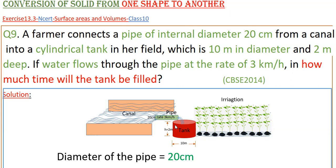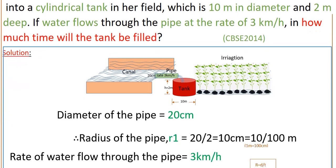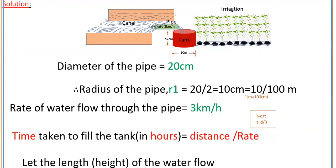Here this cylindrical tank is filled with water from the canal through this pipe. The pipe diameter is given as 20 centimeters and the rate of water flow in this pipe is 3 kilometers per hour, and the tank height is 2 meters deep. The diameter of the tank is 10 meters. Writing the given values: pipe diameter is 20 centimeters, therefore radius of the pipe r1 is equal to diameter divided by 2, that is 20 by 2, which is 10 centimeters.